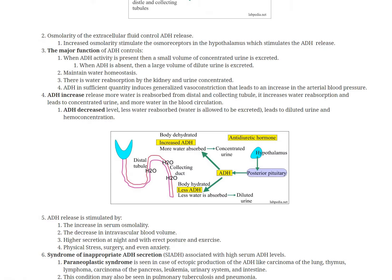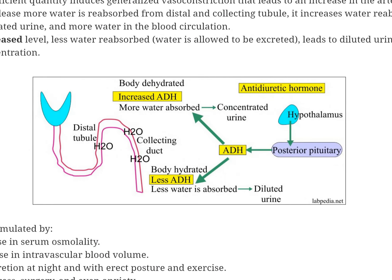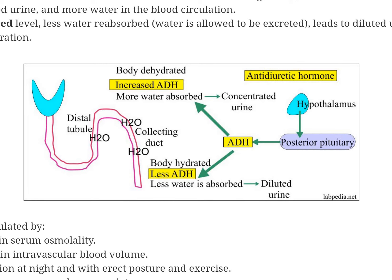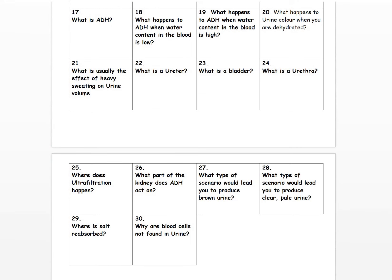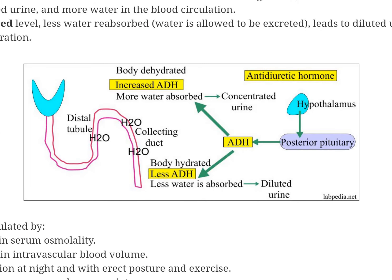Questions eighteen and nineteen — here's a diagram to help. When the water content in the blood is low, because we're dehydrated, there will be an increase in ADH. That will mean that more water will be reabsorbed, creating a concentrated urine. On the other side: if the body is hydrated, there will be less ADH being produced, meaning less water is absorbed and you will get a dilute urine.